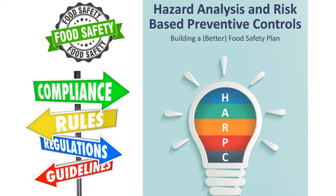All future food safety plans in the United States, and companies exporting products to the U.S., will have to be in line with HARPC instead of HACCP. The major difference between HACCP and HARPC is that the classic HACCP is inadequate to control or mitigate hazards, and a risk-based approach is needed to control them effectively.